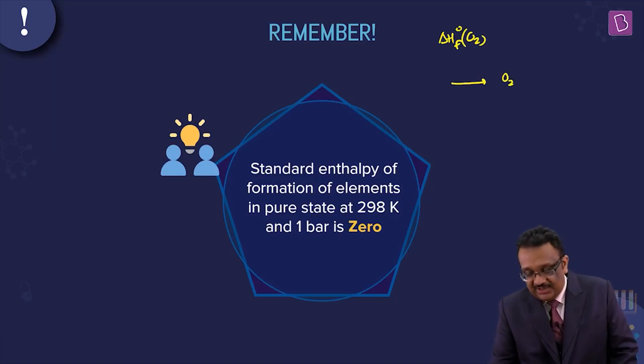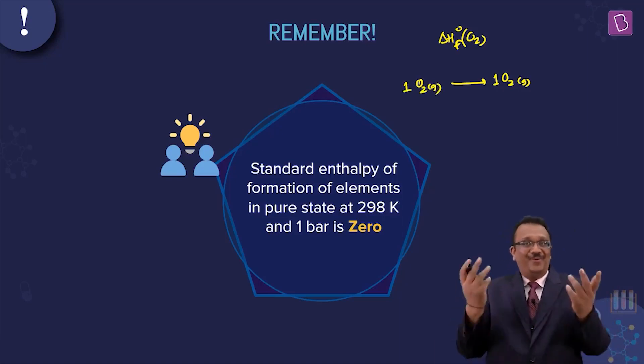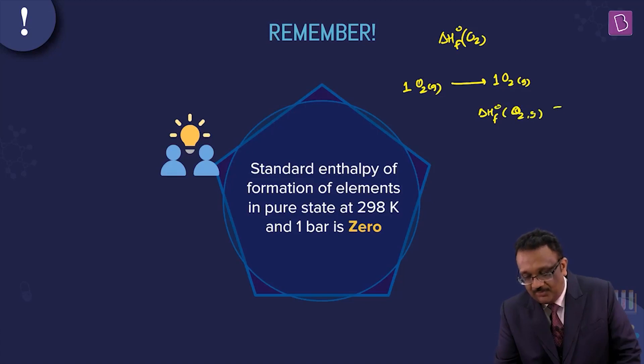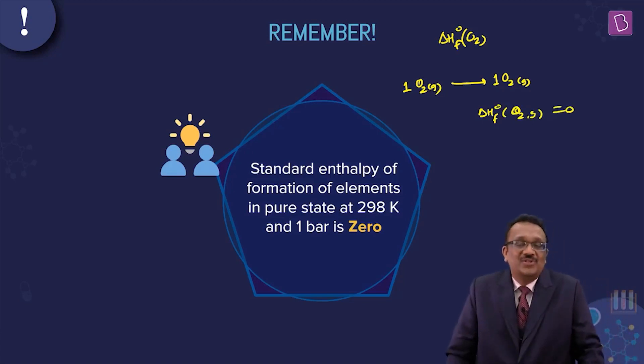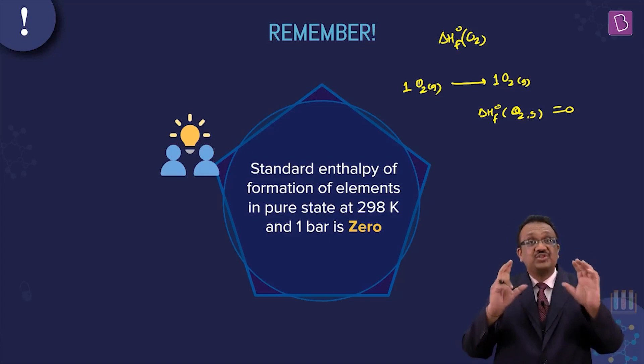It is the enthalpy of formation when one mole of O2 is formed from its constituent element O2 in their standard state. If we make it from itself, if there is no change, then the delta H will be zero. The enthalpy of formation will be zero. By simple common sense logic, enthalpy of formation of all elements in their standard state is zero.